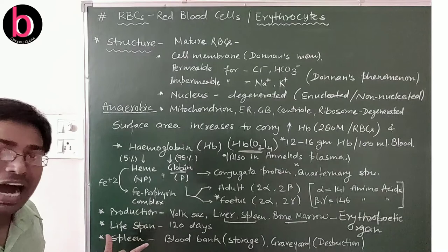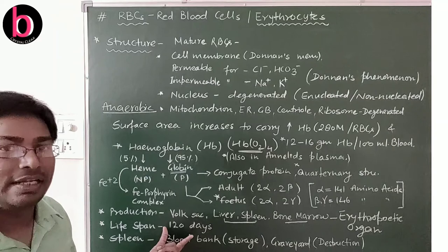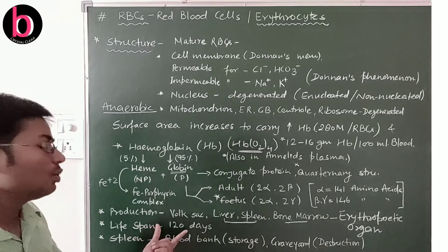The lifespan of RBCs is nearly 120 days in humans and mammals, though in other mammals it may vary slightly.